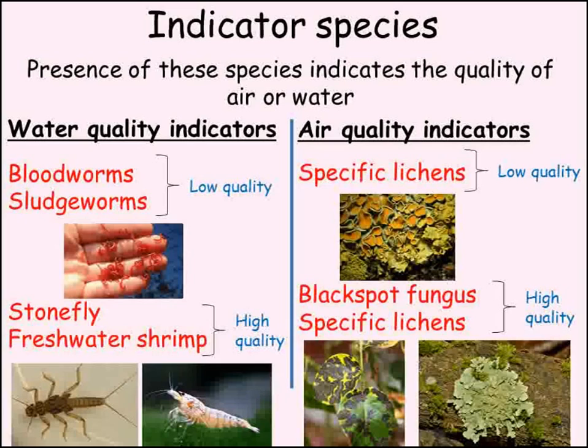Air quality can also be judged using indicator species. Black spot fungus is killed by even low levels of sulphur dioxide, so where it is present the air quality must be good. Lichens are also used to indicate air quality, as different species survive in polluted and clean air.